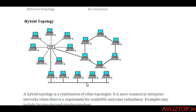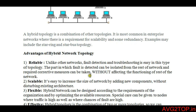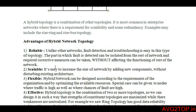Hybrid topology is a combination of a star, ring, and bus topology. The first advantage is reliability — it is a trusted network that has fault detection and is easy to troubleshoot. The second advantage is scalability, which means it is easy to increase the size of the network or its components.